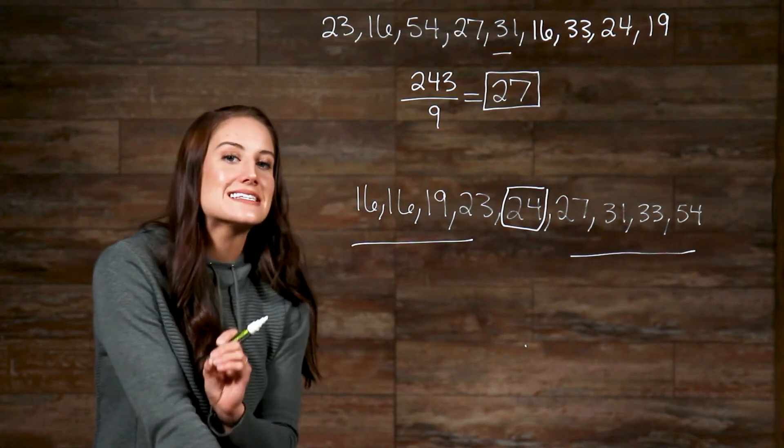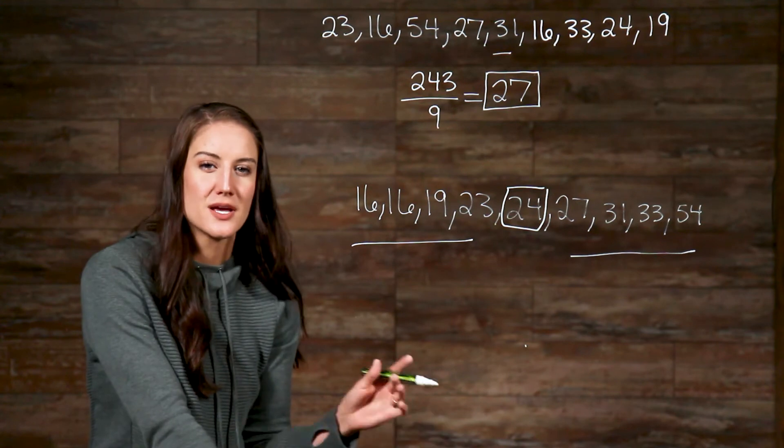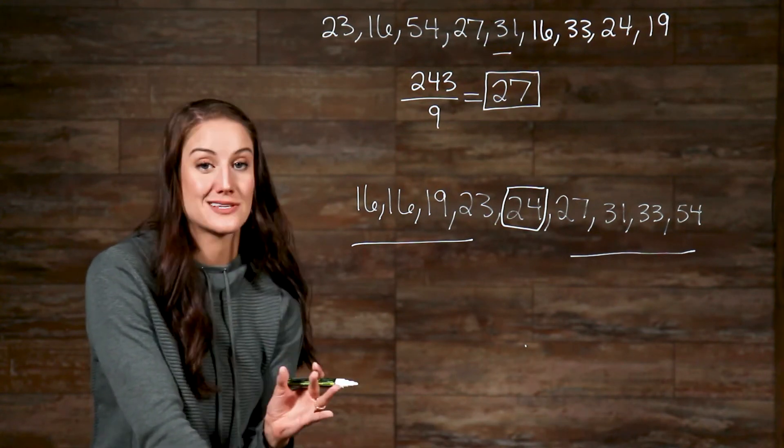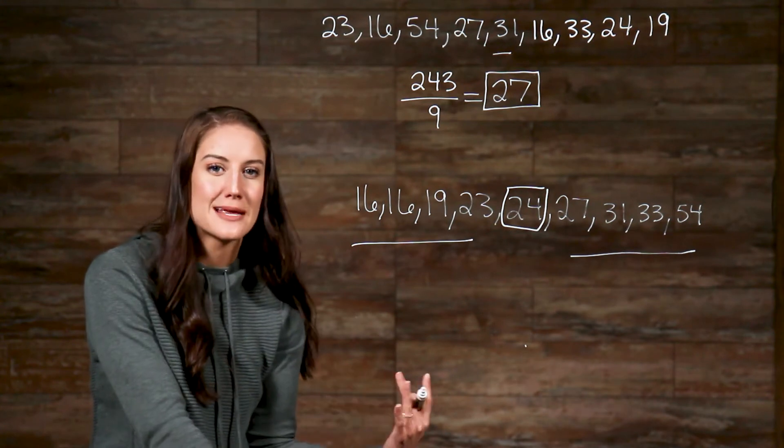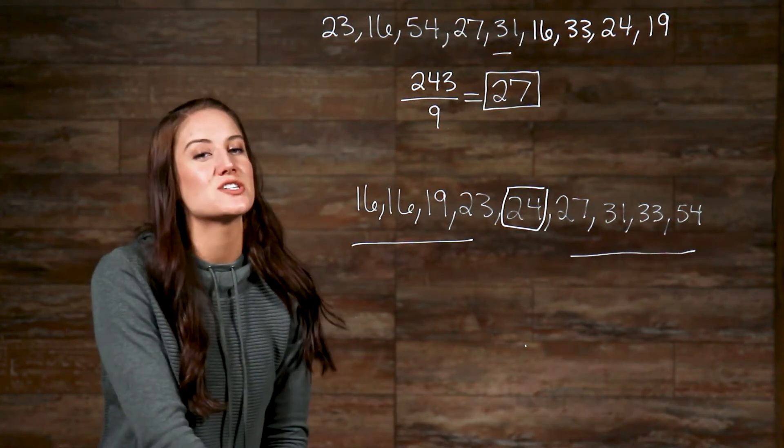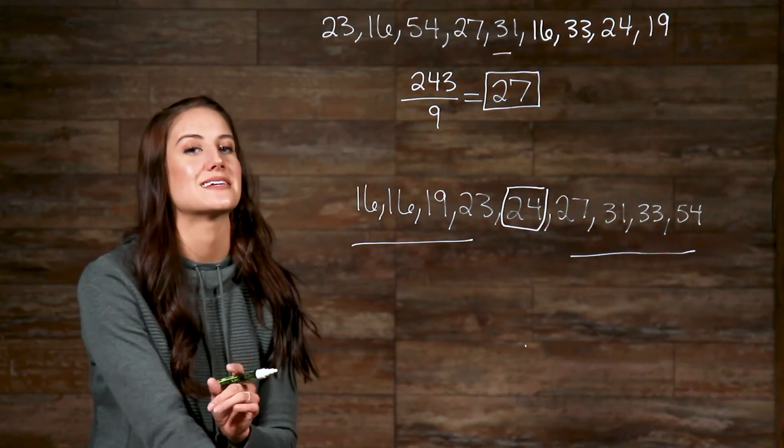Now, we can easily see the middle number in this list because we only have nine numbers, but what happens when we have a list of one thousand numbers? I mean, you can use the same method, but it may take you a little longer. So, mathematicians have graciously worked to give us a formula to make this process quicker.